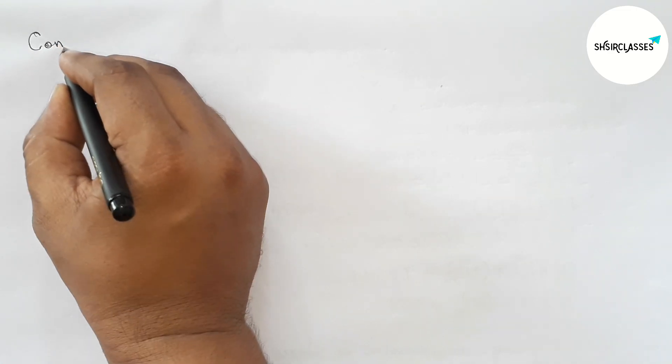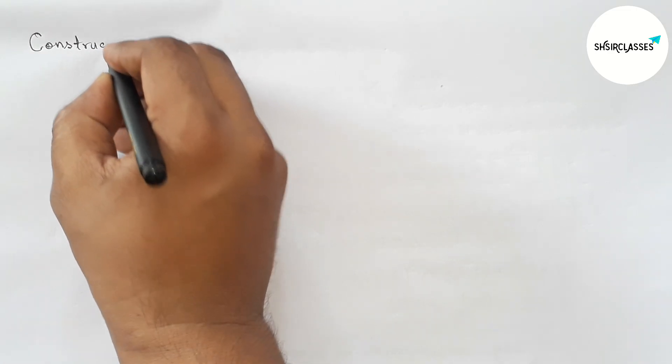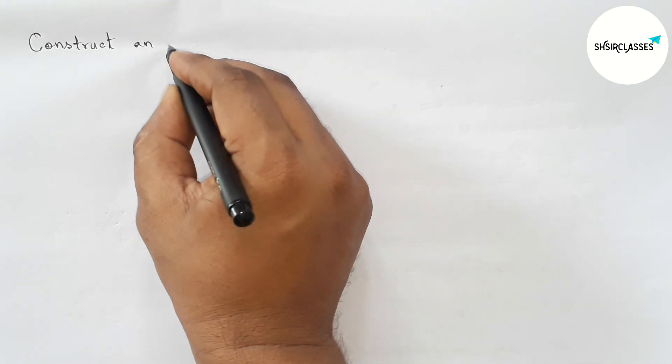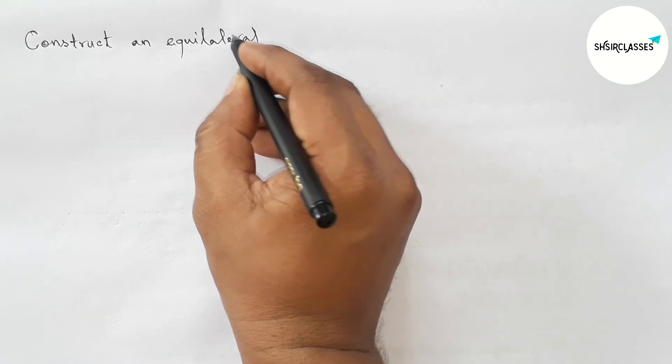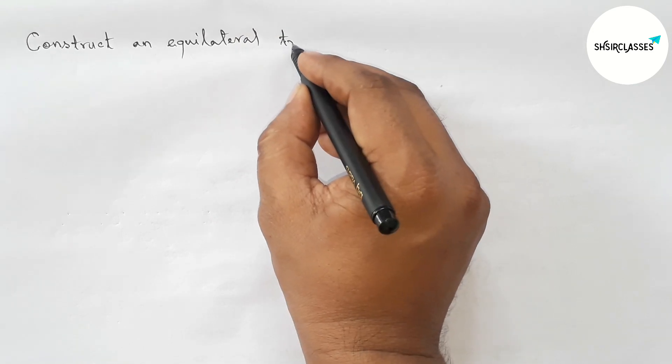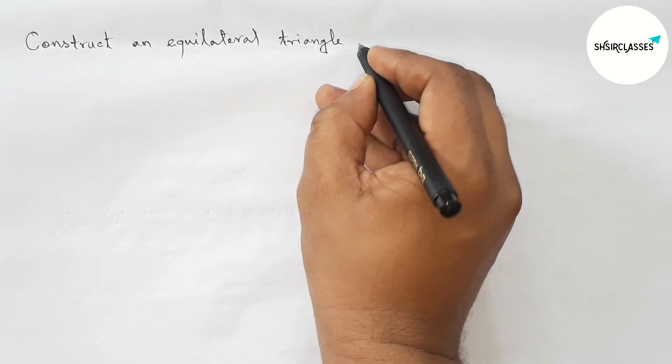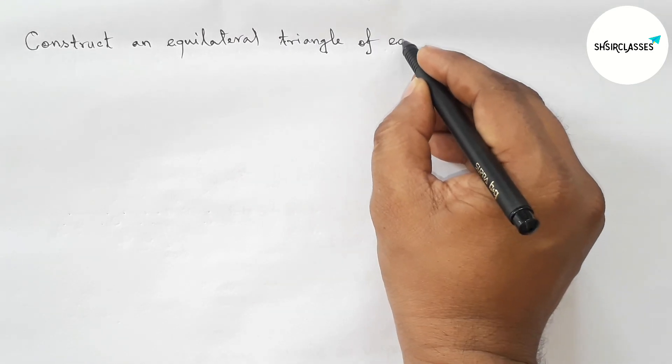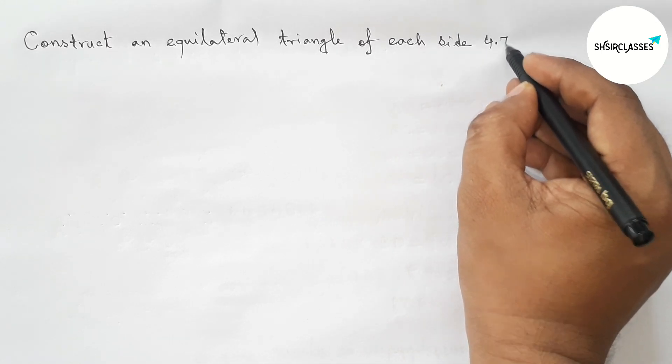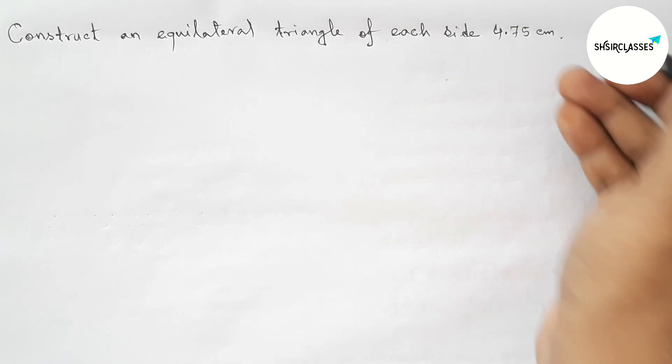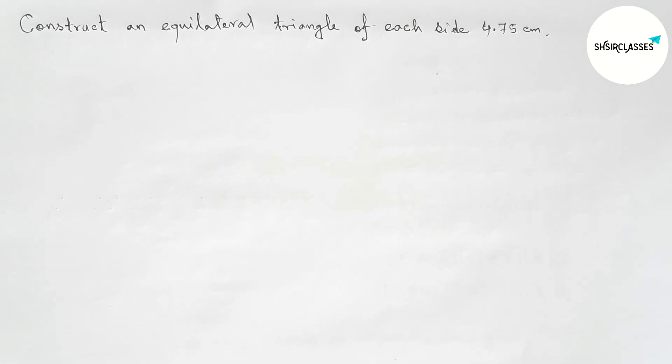Hi everyone, welcome to SI Share Classes. Today in this video we have to construct an equilateral triangle of each side 4.75 centimeter in an easy way. So please watch the video till the end. Let's start the video.